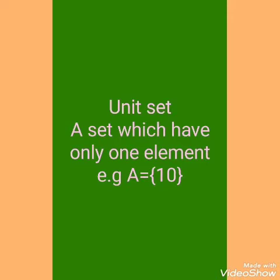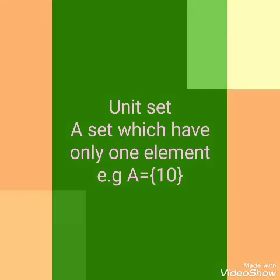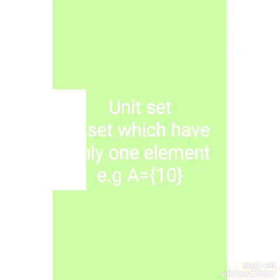Next is a set which has only one element. For example, A equals 10. You can write any other element — any name, any word, any letter, or any number — but there must be only one. Because in a unit set we can only put one element. So sets with one element are called unit set.